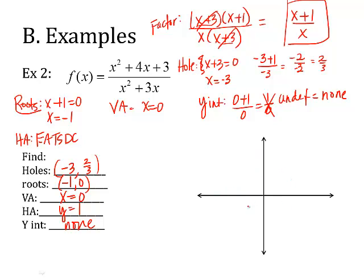Now let's graph these parts. Negative 1, 0 is a root. X equals 0 is a vertical asymptote right along the y-axis, and y equals 1 is the horizontal. I have a hole at negative 3 and 2 thirds — since 2 thirds is less than 1, it's going to be under the asymptote. But there, indeed, is a hole. No y-intercept at all.